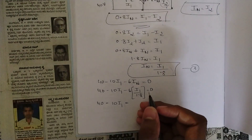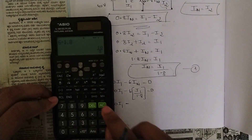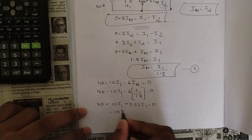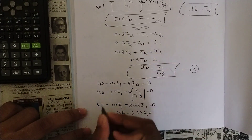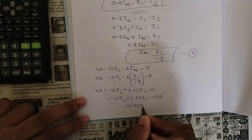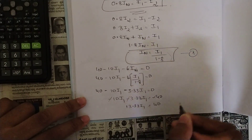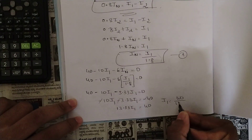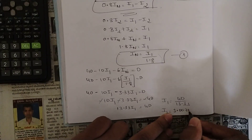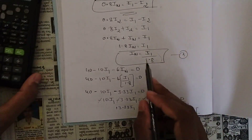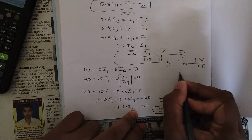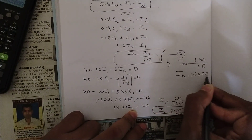6 divided by 1.8 gives 3.33, so: 40 minus 10 I1 minus 3.33 I1 equals 0, which gives 13.33 I1 equals 40, so I1 equals 40 divided by 13.33, which is approximately 3.007 amperes. Substituting back: IN equals I1 divided by 1.8 equals 3.007 divided by 1.8, which equals approximately 1.667 amperes.